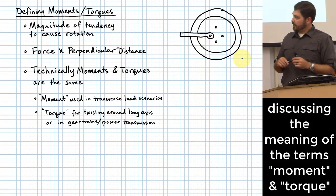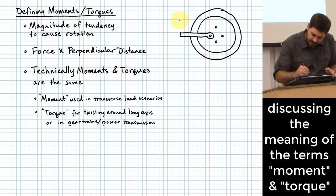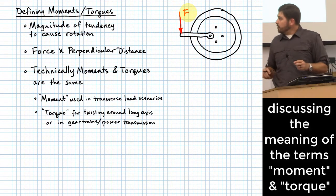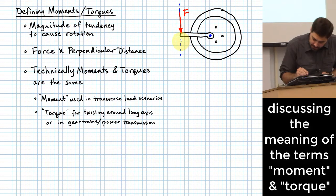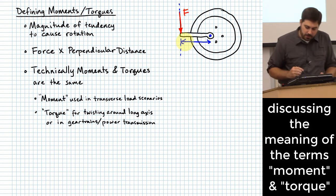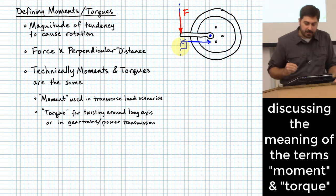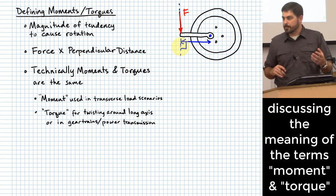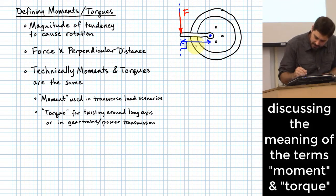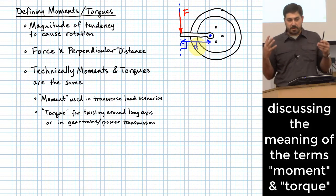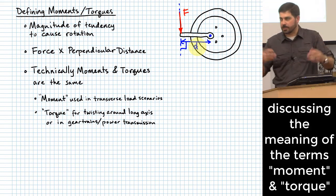The basic definition is you take a certain magnitude of force — we could show that on an example of a lug wrench on a lug nut — and then you figure out how far the line of action of that force is away from the point that you are evaluating the moments around, measured perpendicularly to the line of action of the force. You take the product of those two values, and that measures this tendency to cause rotation.